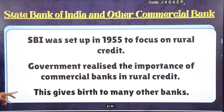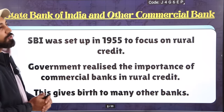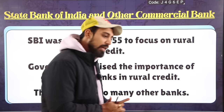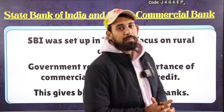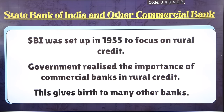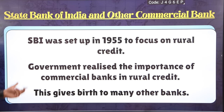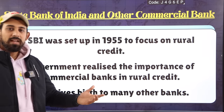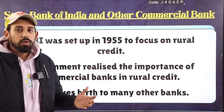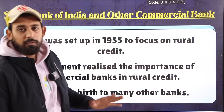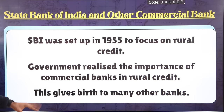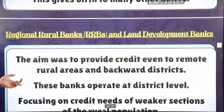SBI and other commercial banks play a key role. The State Bank of India was set up in 1955 to focus on rural credit. The government realized the importance of commercial banks in rural credit, which led to many other commercial banks being involved. The first commercial bank set up for rural farming credit was SBI.